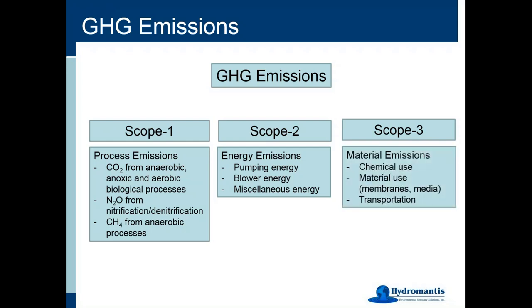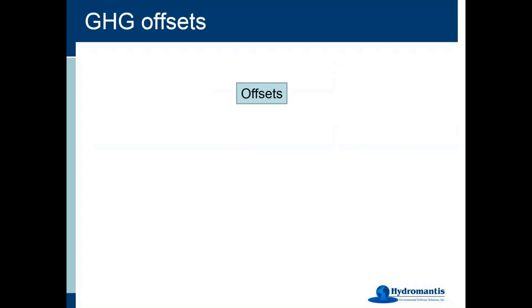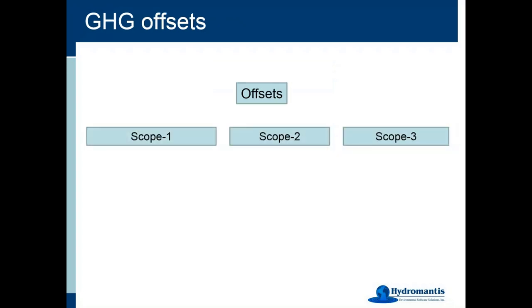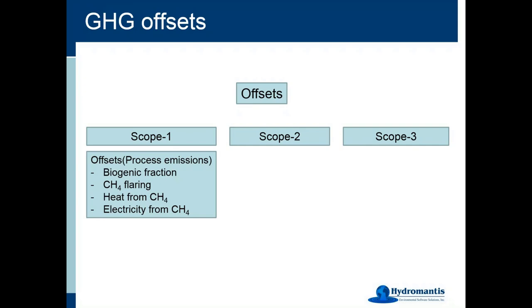Scope 3 emissions are related to material consumption — for example, use of chemicals, materials, and some transportation emissions. We set up the model to estimate all scope 1, scope 2, and scope 3 emissions. With respect to offsets, there are again three types corresponding to the three scopes.